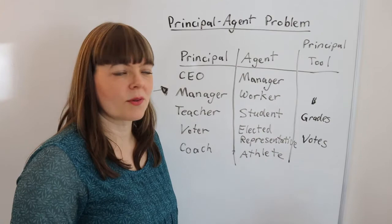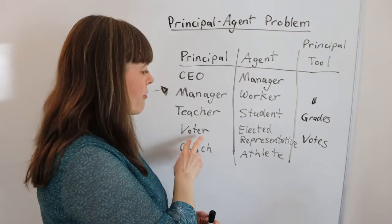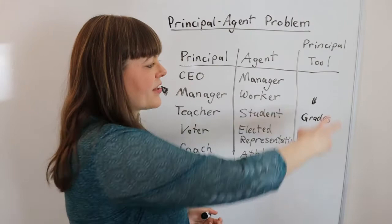The principal-agent problem is simply the problem that you can never fully incentivize someone else who has their own motives and their own incentives. And the toolset you have to incentivize those people is sometimes somewhat limited.